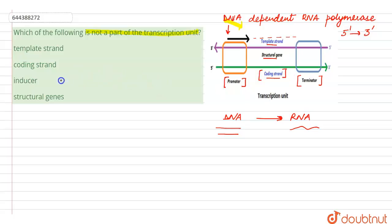Except for U in place of T. Looking at the options given: template strand, yes this is correct; coding strand is correct; but inducer is not a part of it.